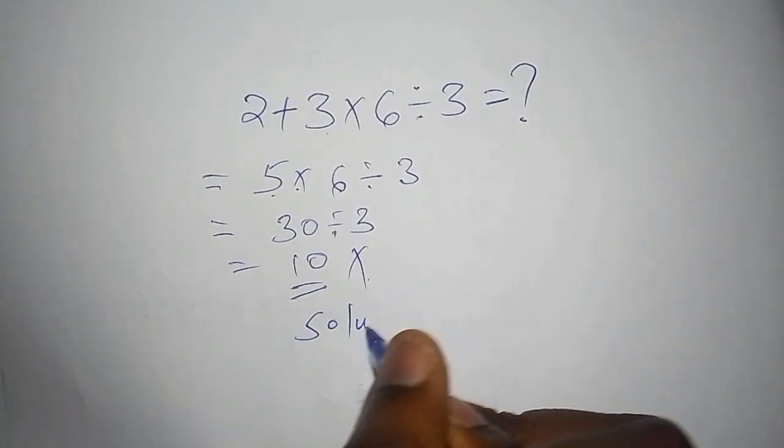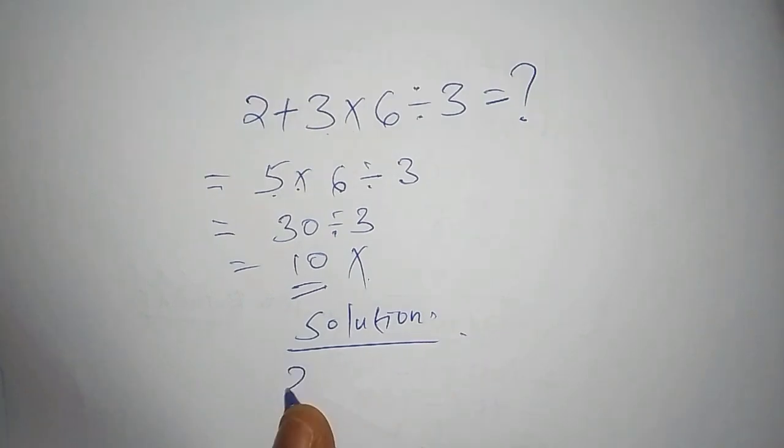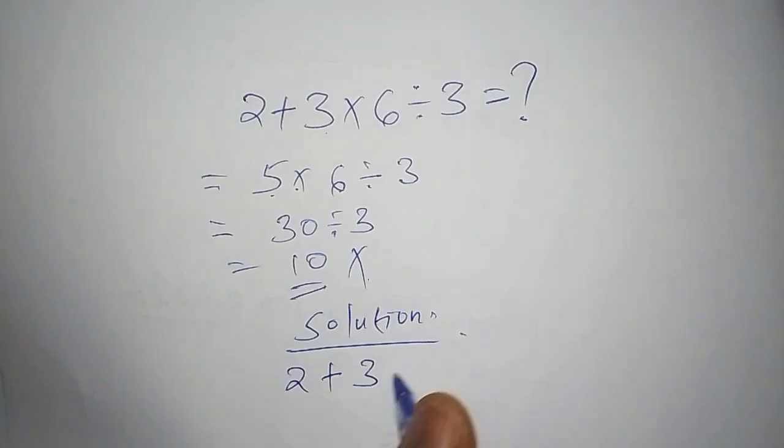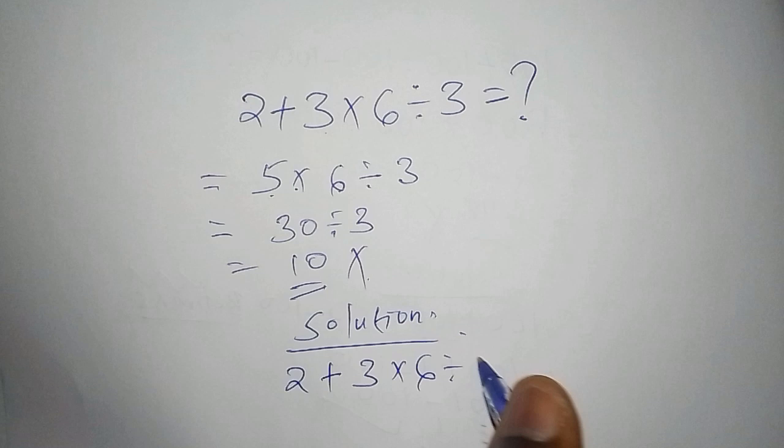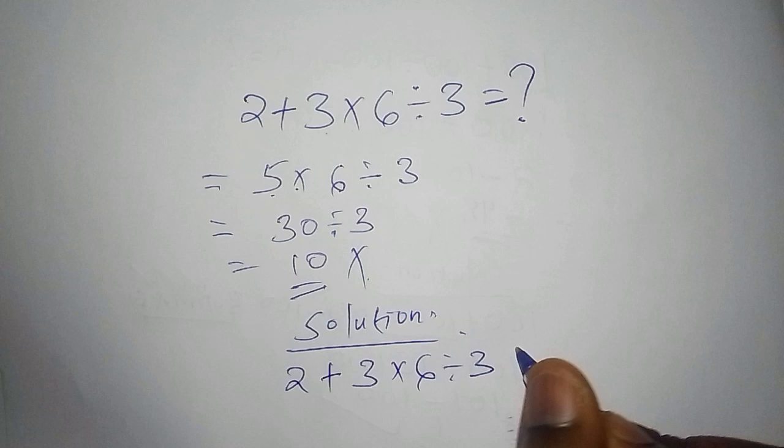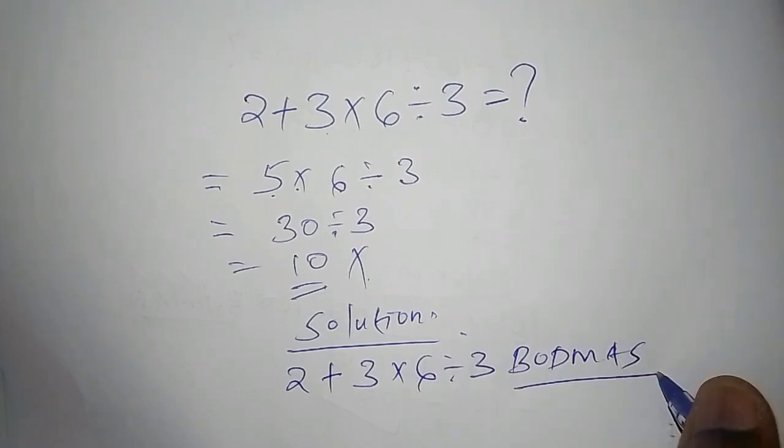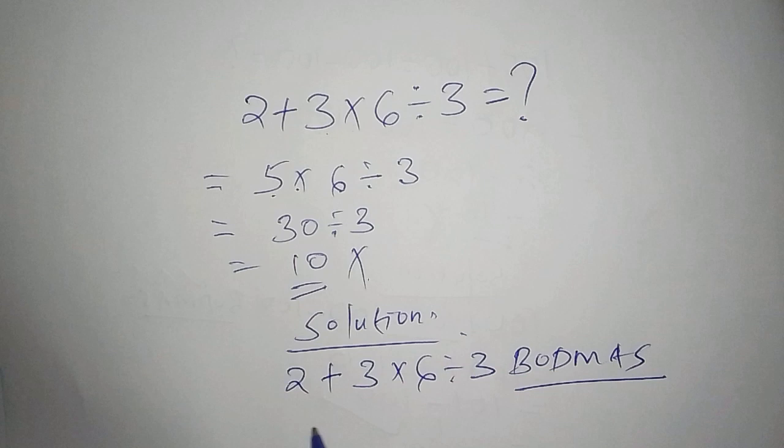So under the solution, let's write the problem we have: 2 add to 3 multiply by 6 divide by 3. Now for us to work out this operation in the correct order, we need to bring something that is called the BODMAS.